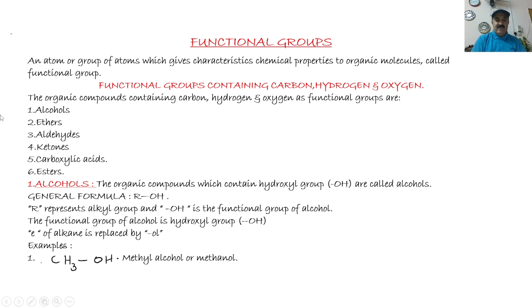For naming alcohols, the 'e' at the end of the alkane name is replaced by 'ol'. For example, CH3OH has one carbon. In the common system its name is methyl alcohol. In the IUPAC system, we take methane — the 'e' is replaced by 'ol' — so its IUPAC name is methanol.